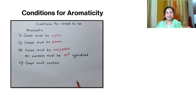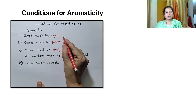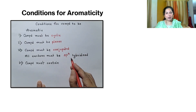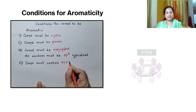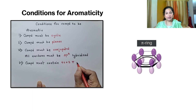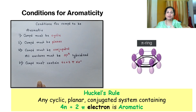Now, if a compound satisfies the first three conditions, we need to check the number of pi electrons present in it. A compound will be aromatic only if it contains 4n+2 pi electrons. This is in fact Hückel's rule, which states that any cyclic planar conjugated system containing 4n+2 pi electrons is aromatic.